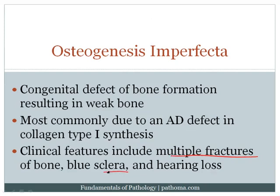Patients with osteogenesis imperfecta will also have blue sclera. The sclera normally contains a lot of type 1 collagen, so if there's a defect, the sclera will be thin. Board examiners like to ask why the sclera are blue — the answer is that it is due to exposure of the choroidal veins, which is high yield.